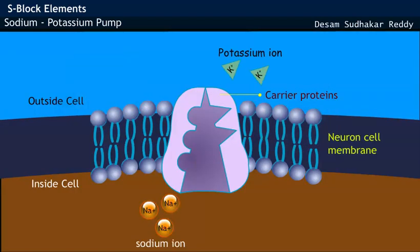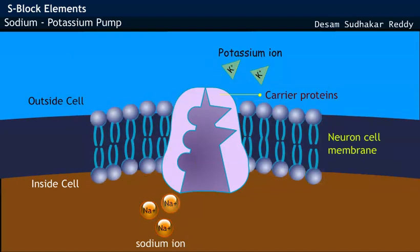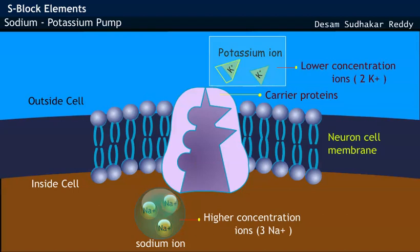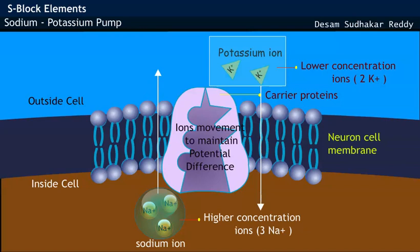Both sodium ions and potassium ions are present both inside and outside the neuron cell membrane. Since the concentration of positively charged ions is greater outside the cell than inside, an electrical potential difference develops. Thus sodium ions and potassium ions move inside and outside the cell membrane to maintain potential difference.